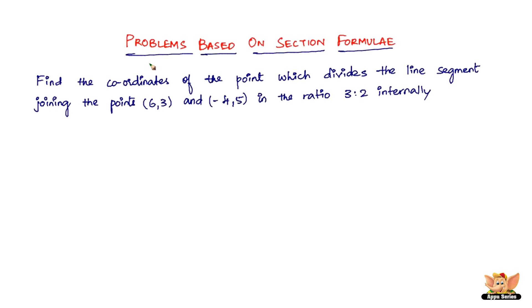In this video, let us solve problems based on section formulae. We've got a problem here which reads like this: find the coordinates of the point which divides the line segment joining the points in the ratio 3 to 2 internally.